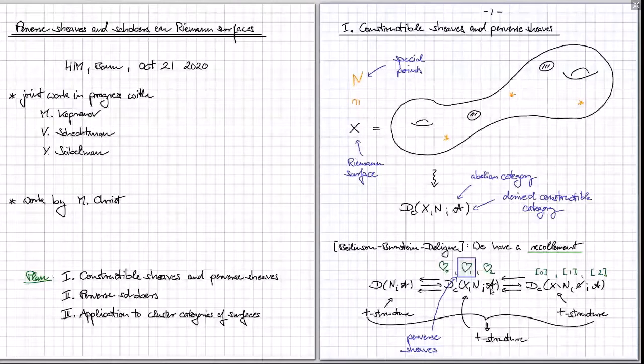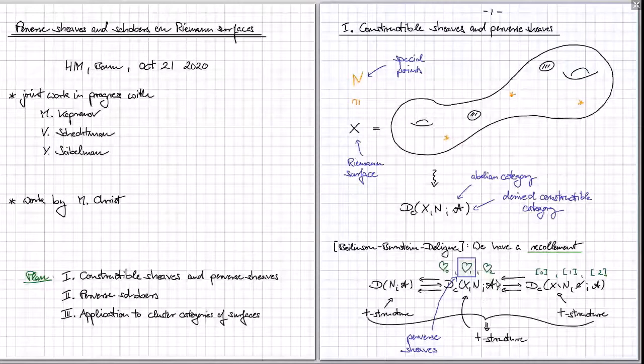The first question we want to understand is: if I hand you an object of this derived constructible category, how can you tell whether this object lies in the heart of one of these t-structures? We want a nice recognition criterion. BBD gives a criterion within this general context, but we will aim at a slightly different criterion.